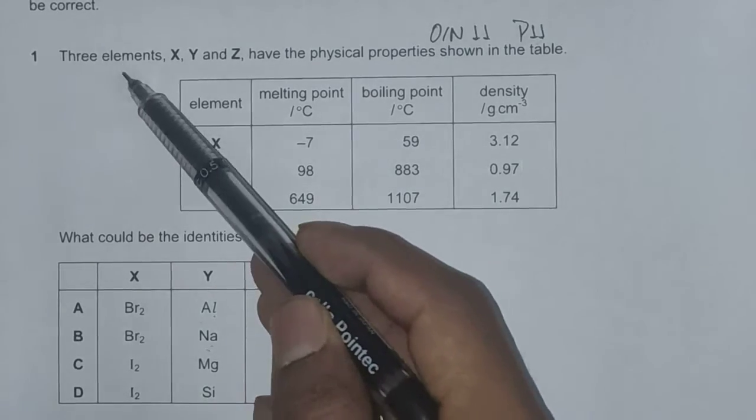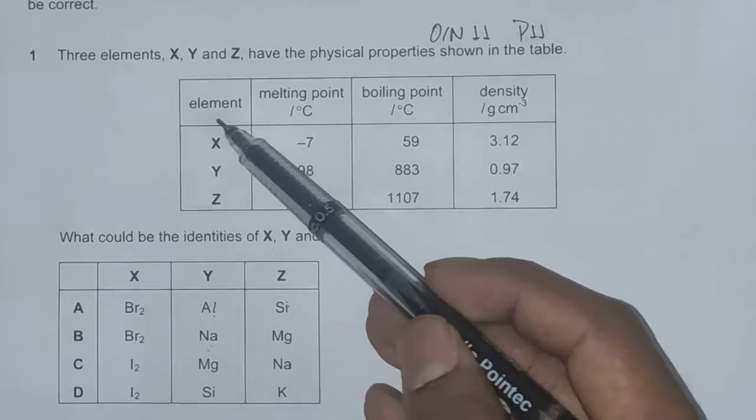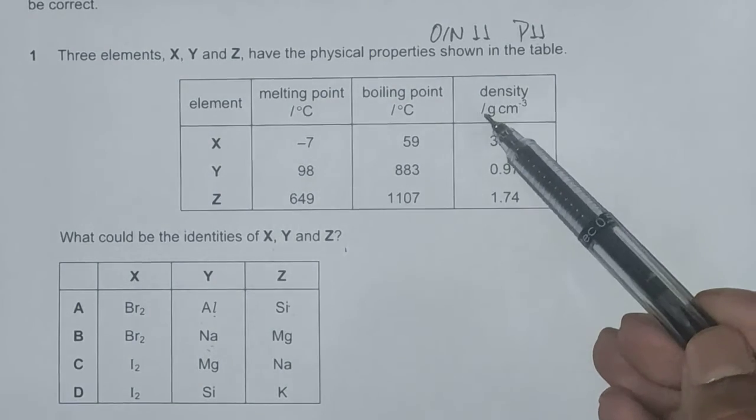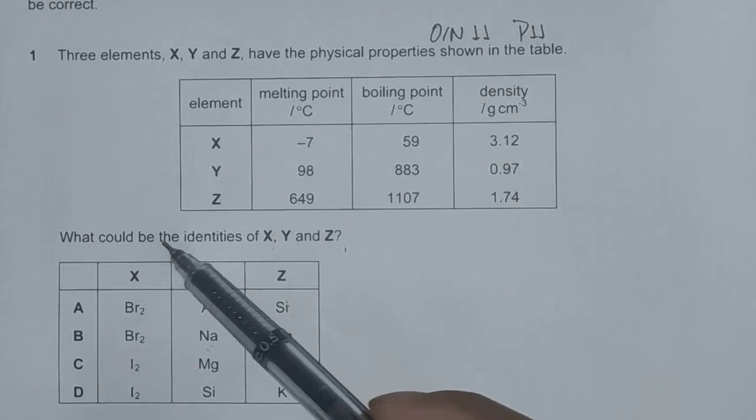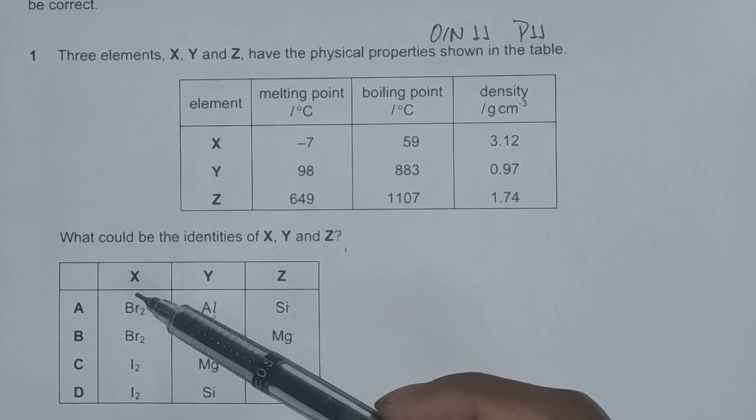The question reads: three elements X, Y, and Z have physical properties shown in the table. In the table we have been given the element X, Y, and Z, their melting point, boiling point, and density in grams per centimeter cubed. The question asks what could be the identities of X, Y, and Z.